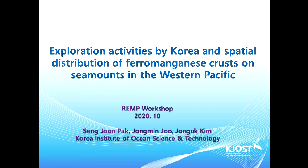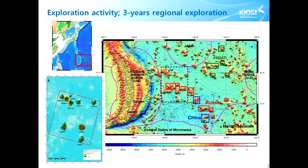Today, I am going to briefly update you on the crust distributions in the area. The exploration area, shown in the red box, is located east of the Northern Mariana Islands. The right panel shows the area under exploration in detail. The black broken line box area is situated nearby the Russian tenements, and you can also see the selected seamounts after exploration.